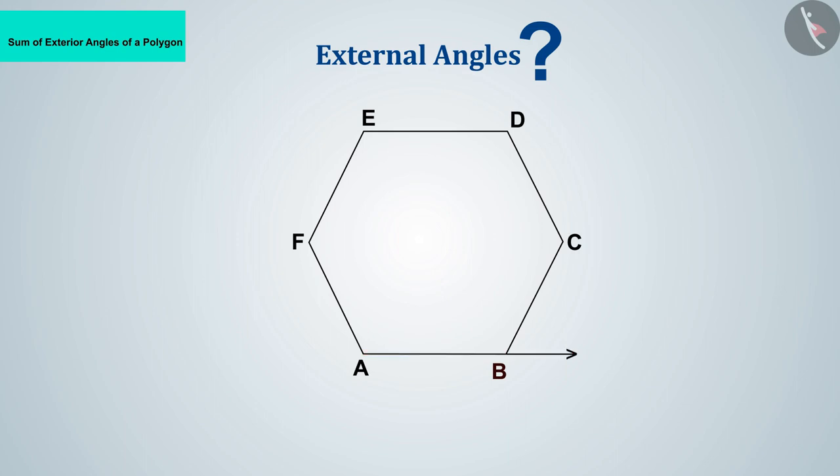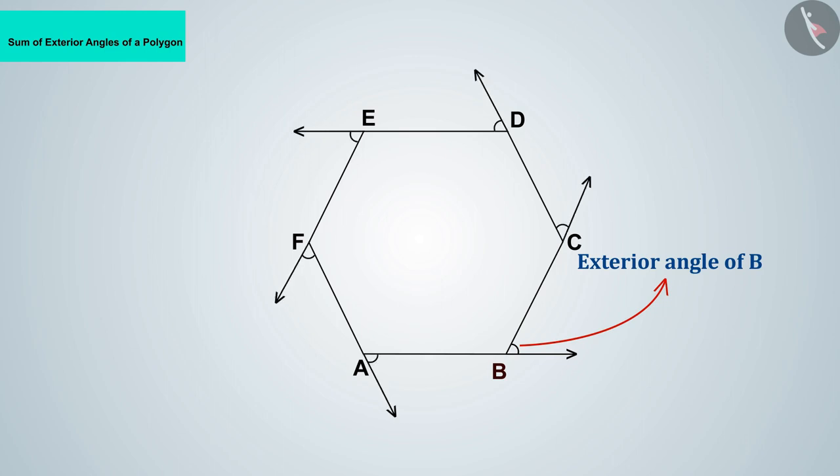Move AB outward. The angle that will form between AB and BC outside the polygon is called the exterior angle of B. All external angles of the hexagon are shown in this figure.